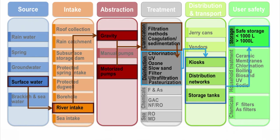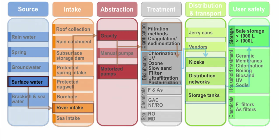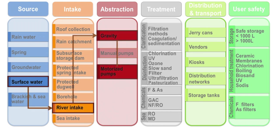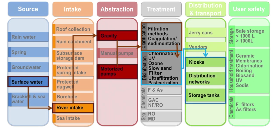Here you see an example for a centralized or semi-centralized system supplying and treating surface water. Surface water is collected at a protected or unprotected river or lake intake. It is delivered by gravity or motorized pumping to the treatment plant, where it is clarified and disinfected. Ice may be sold at the water kiosk or fed into the distribution network. Safe water storage at home might be needed to cover for interruptions.